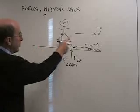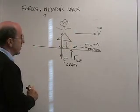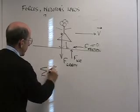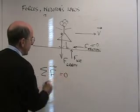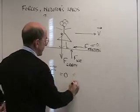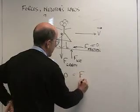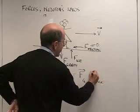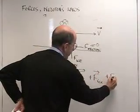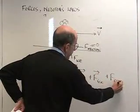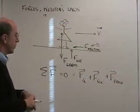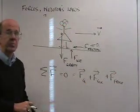So the fact that she's moving at a constant velocity says that the sum of all the forces acting on her must be equal to zero. That means that the force of gravity plus the force of the ice plus the force of friction, all of that must be equal to zero in order to produce the result that we observe.